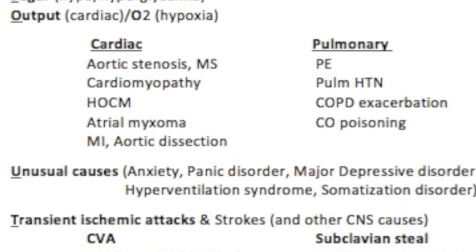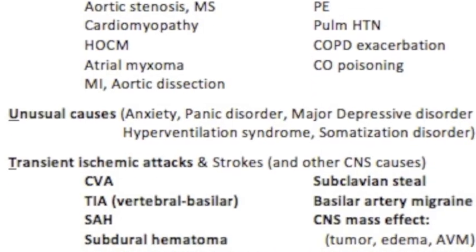O is for Output and Oxygen. Cardiac output causes include aortic stenosis, mitral stenosis, cardiomyopathy, hypertrophic cardiomyopathy, atrial myxomas, MIs, and aortic dissections. Pulmonary/oxygen causes include PE, pulmonary hypertension, COPD exacerbation, and carbon monoxide poisoning.